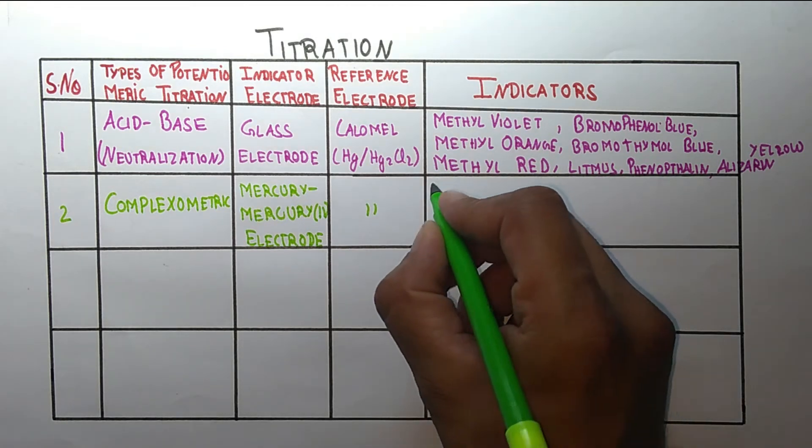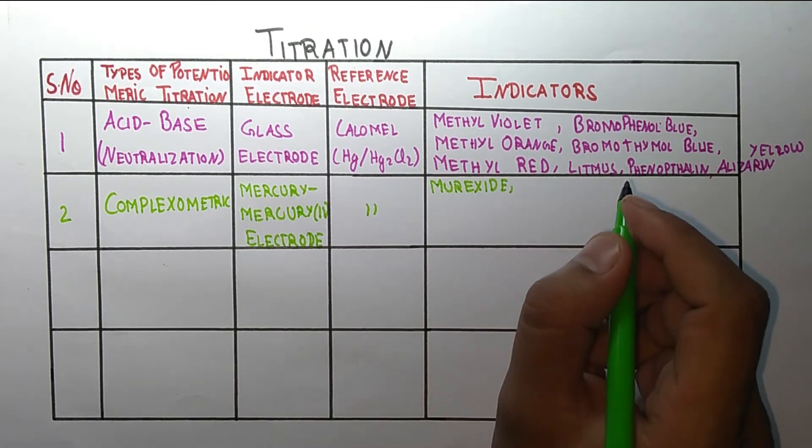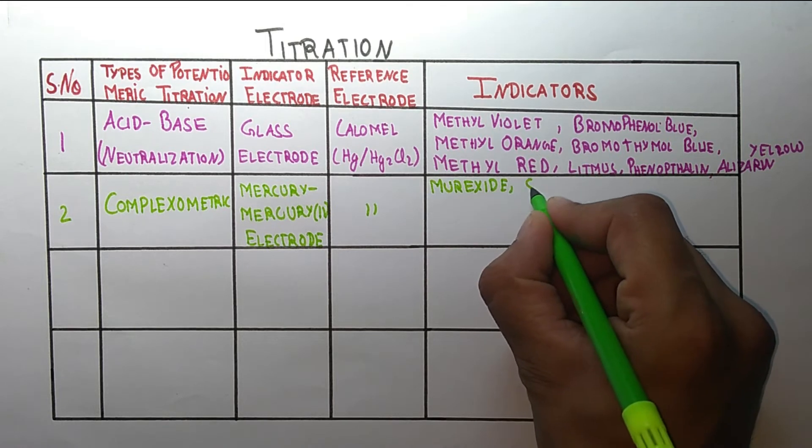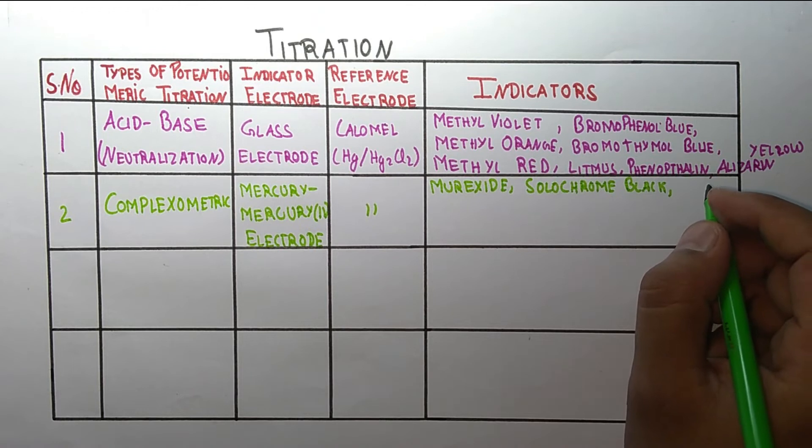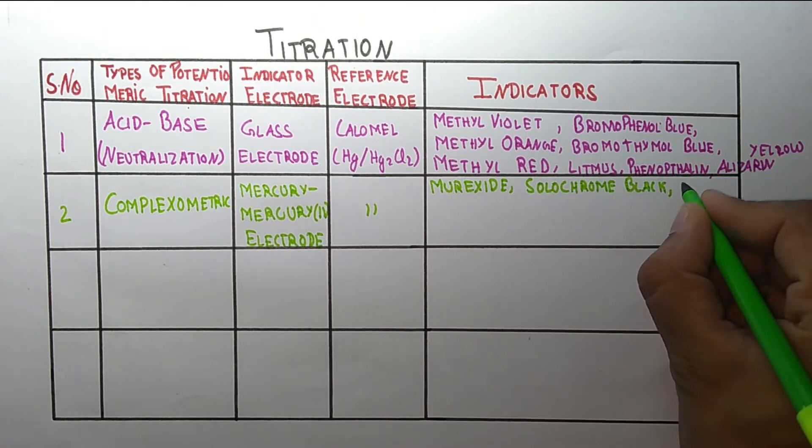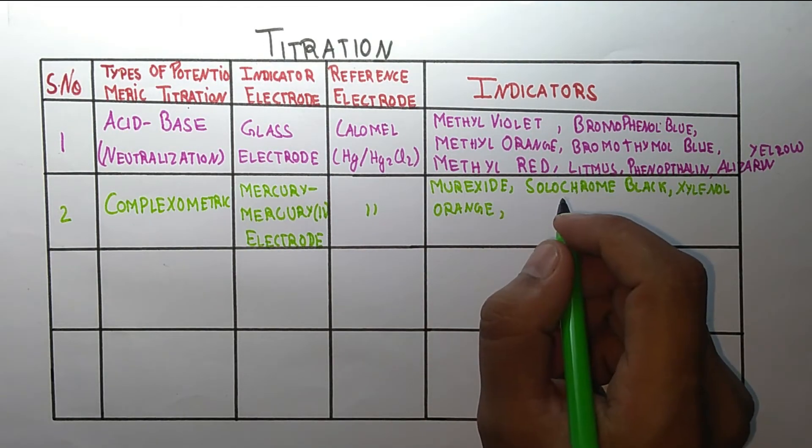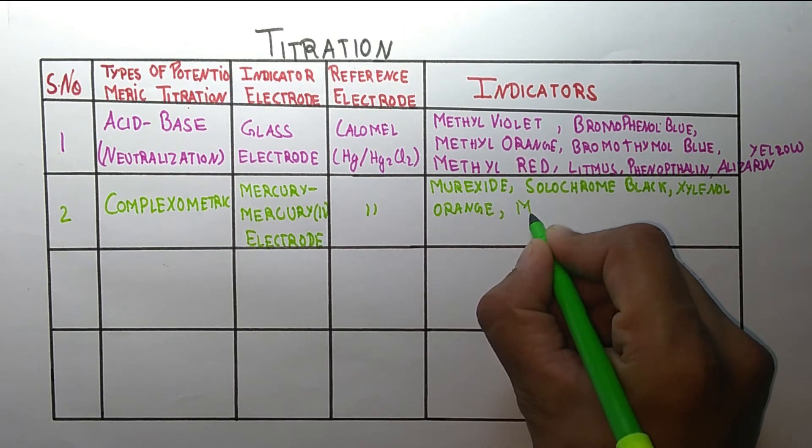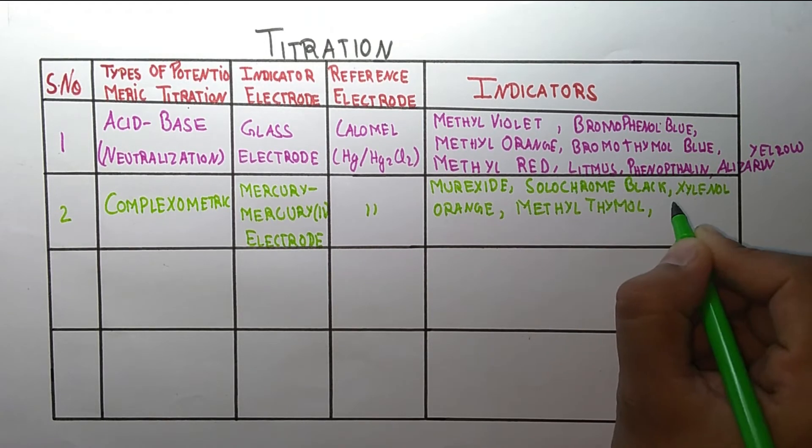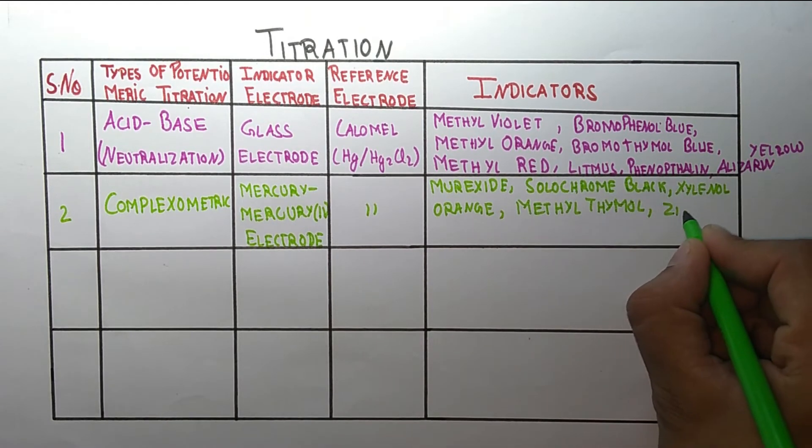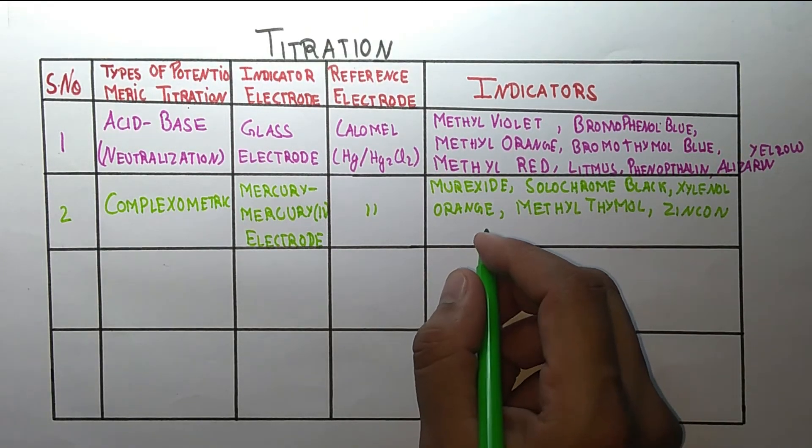First one is murexide, second one is solochrome black, third one is xylenol orange, fourth one is methyl thymol, fifth one is zincon, and the last one is variamine blue.